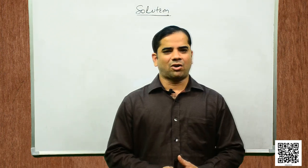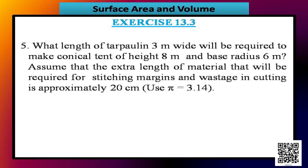Let us now solve question number 5, exercise 13.3. It says: what length of tarpaulin 3 meters wide will be required to make a conical tent of height 8 meters and base radius 6 meters? Assume that the extra length of material required for stitching margins and wastage in cutting is approximately 20 centimeters. We will take the value of pi as 3.14 as instructed in the question. So, let us solve the question.